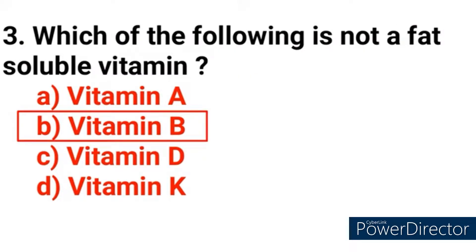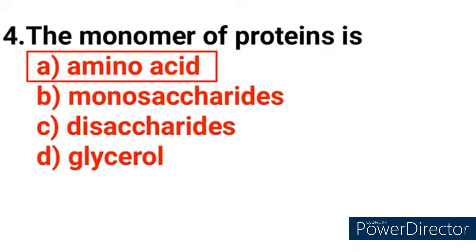Question number 3: Which of the following is not a fat-soluble vitamin? Answer option B — Vitamin B. Question number 4: The monomer of proteins is? The correct answer is option A — amino acid.